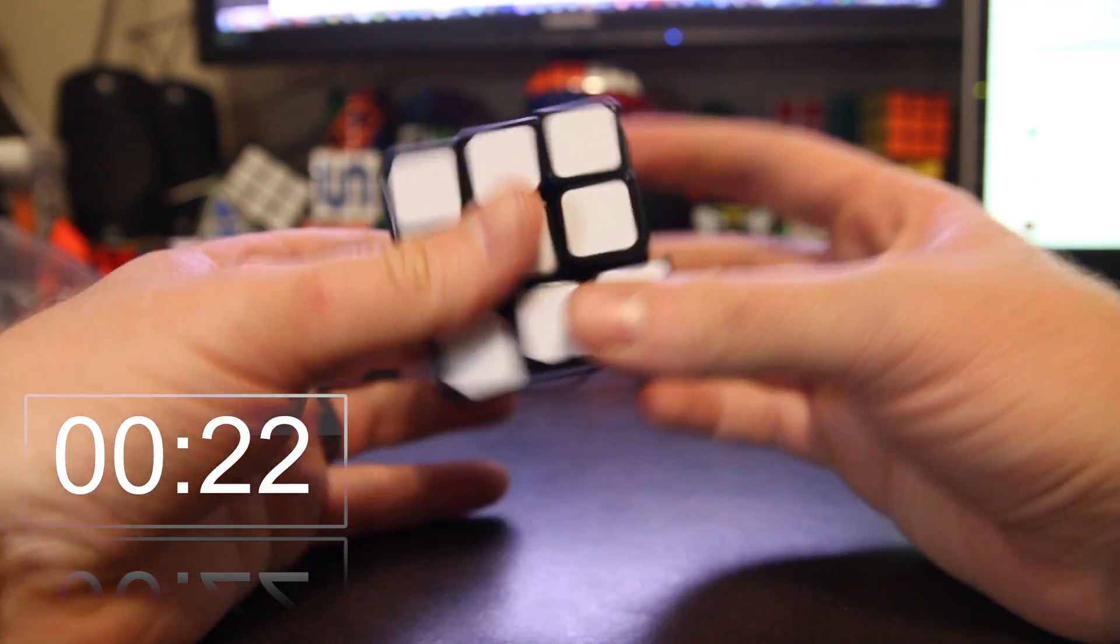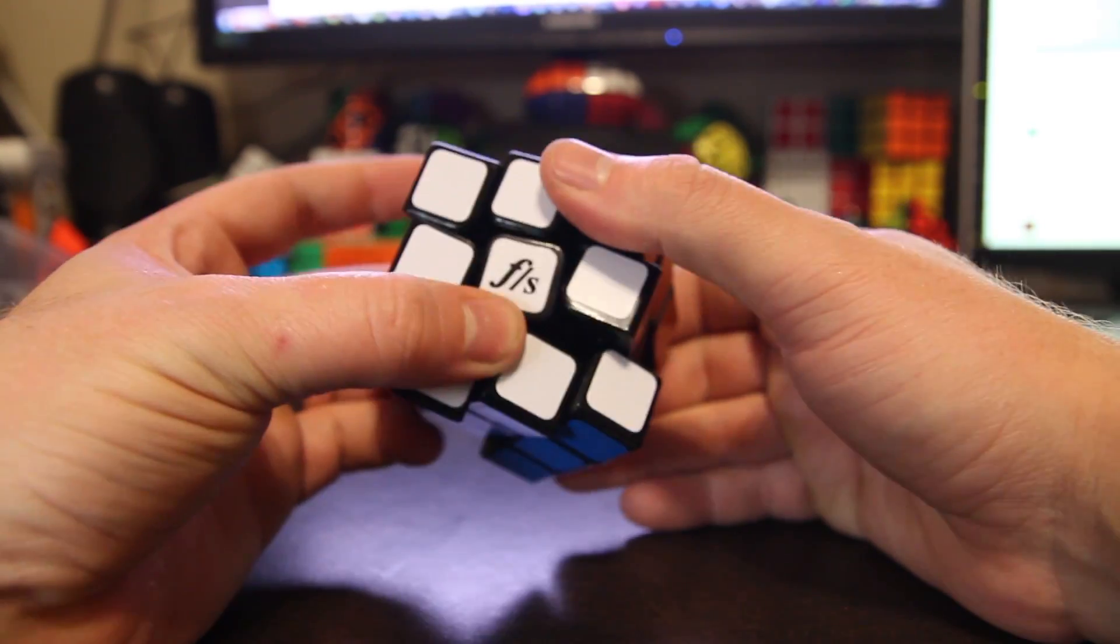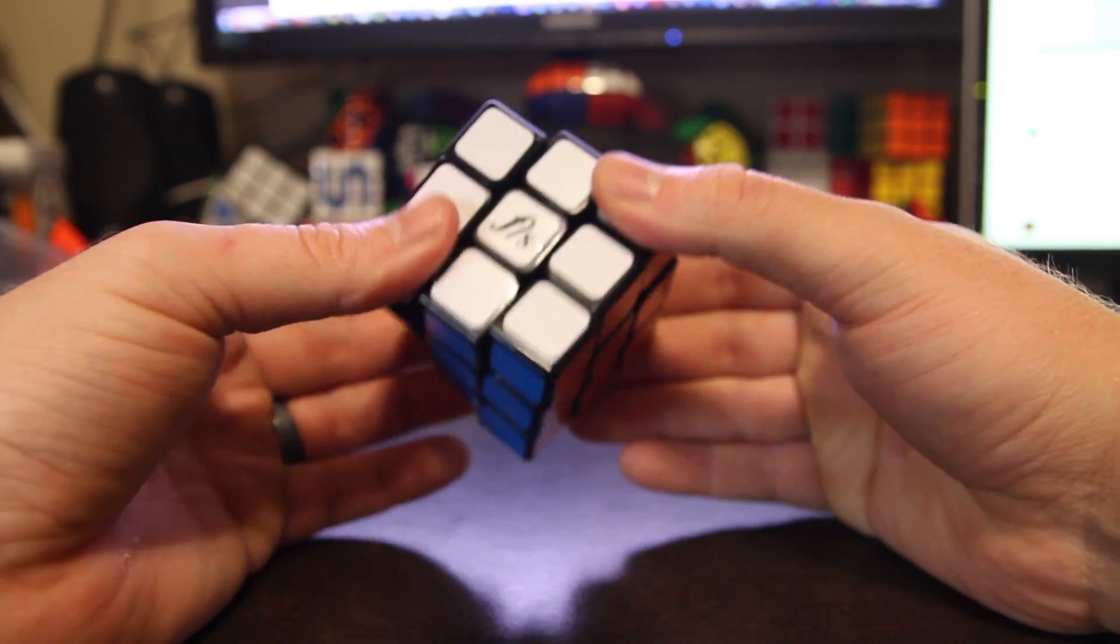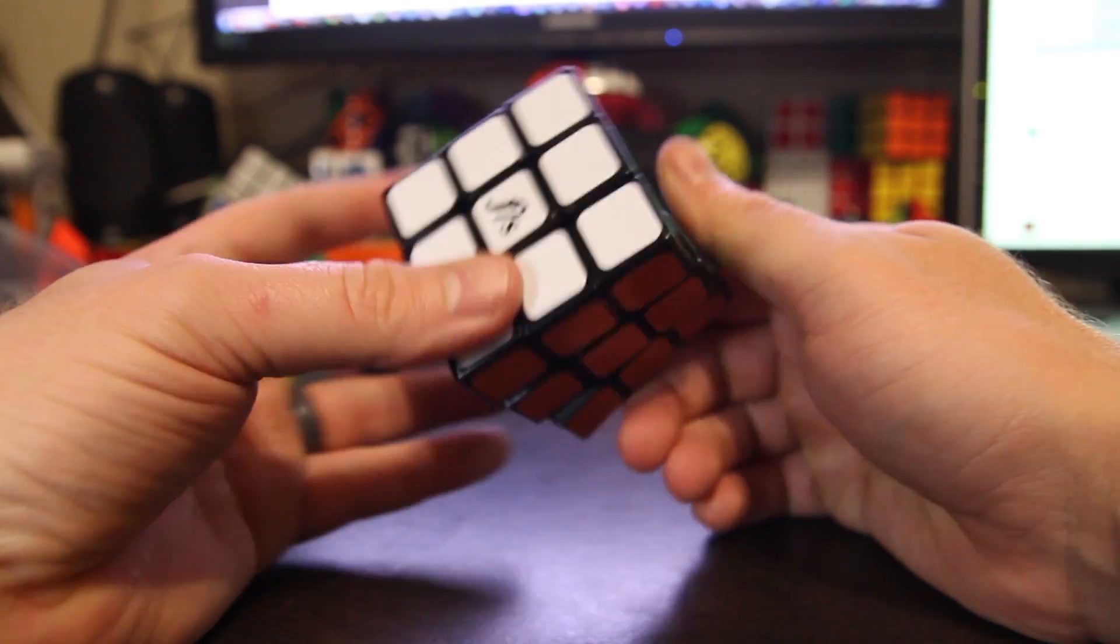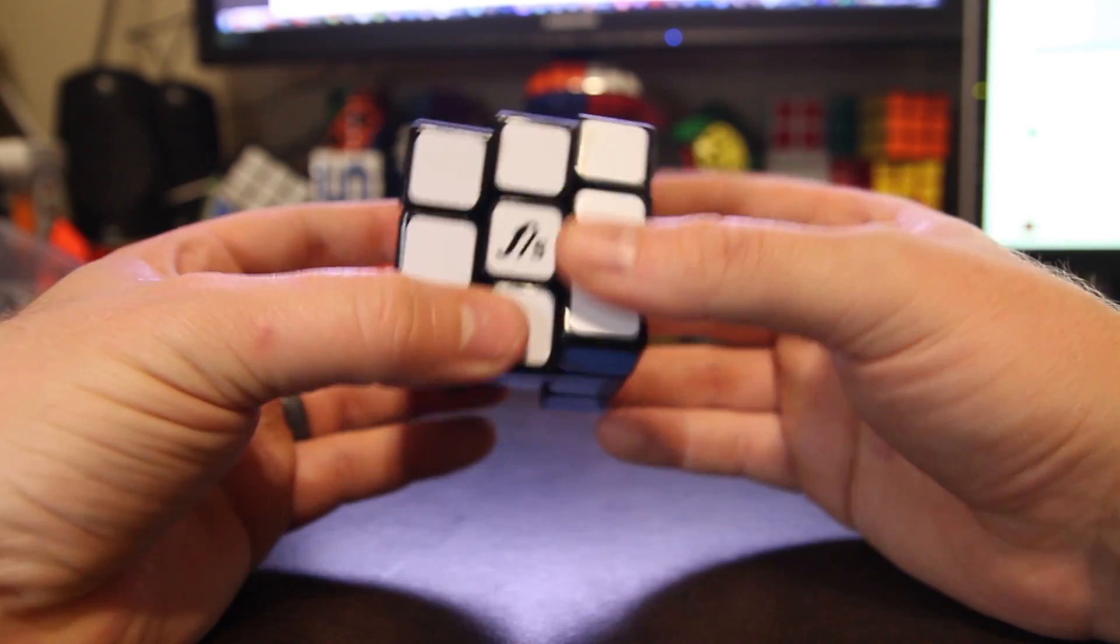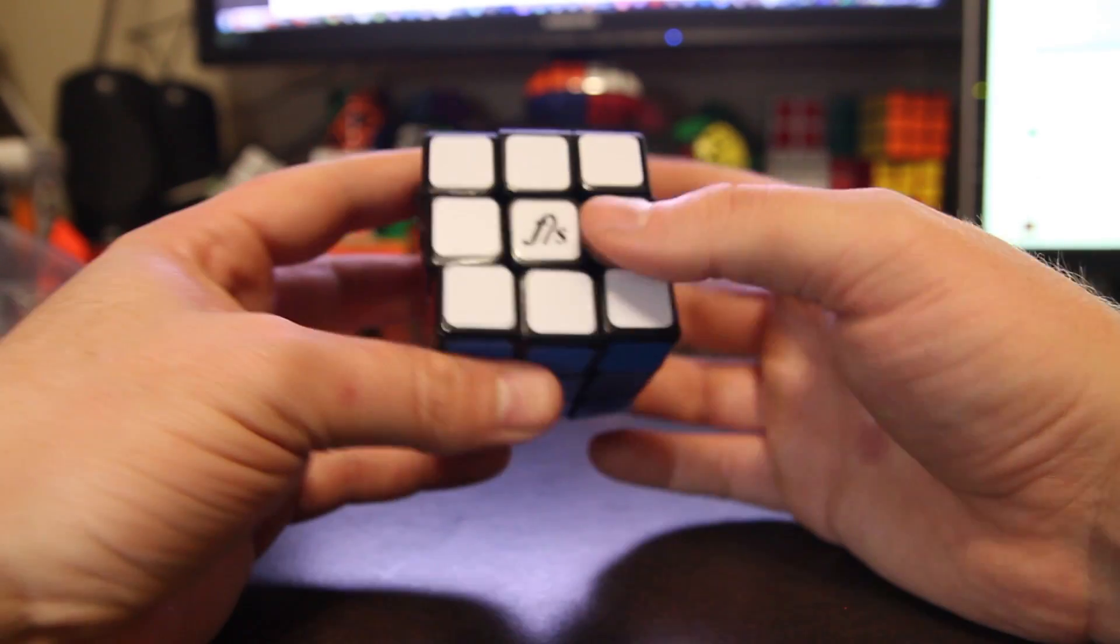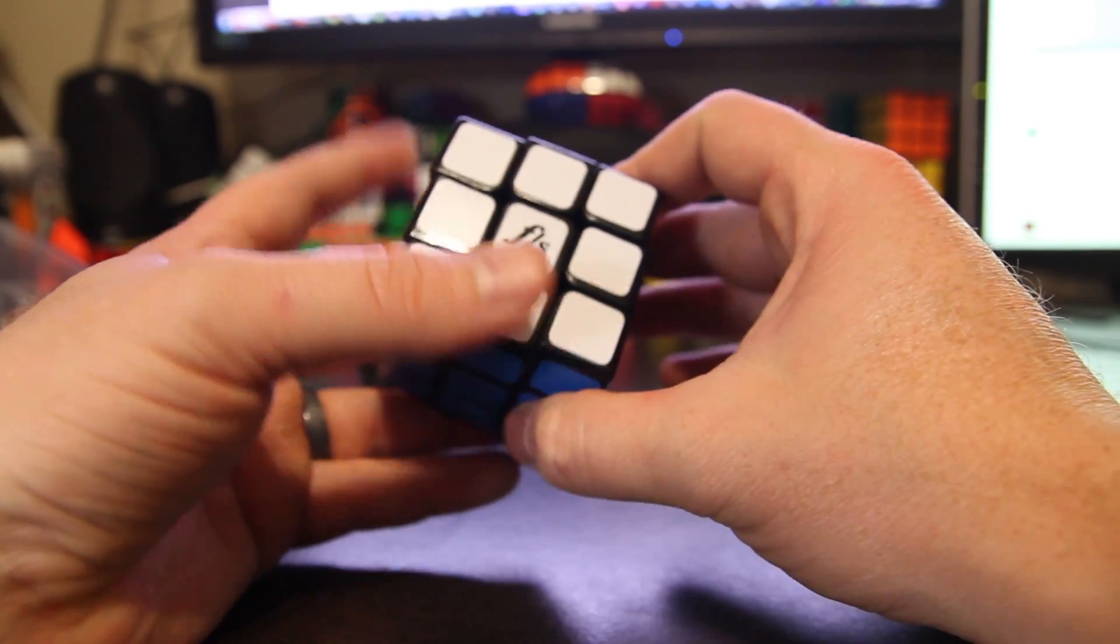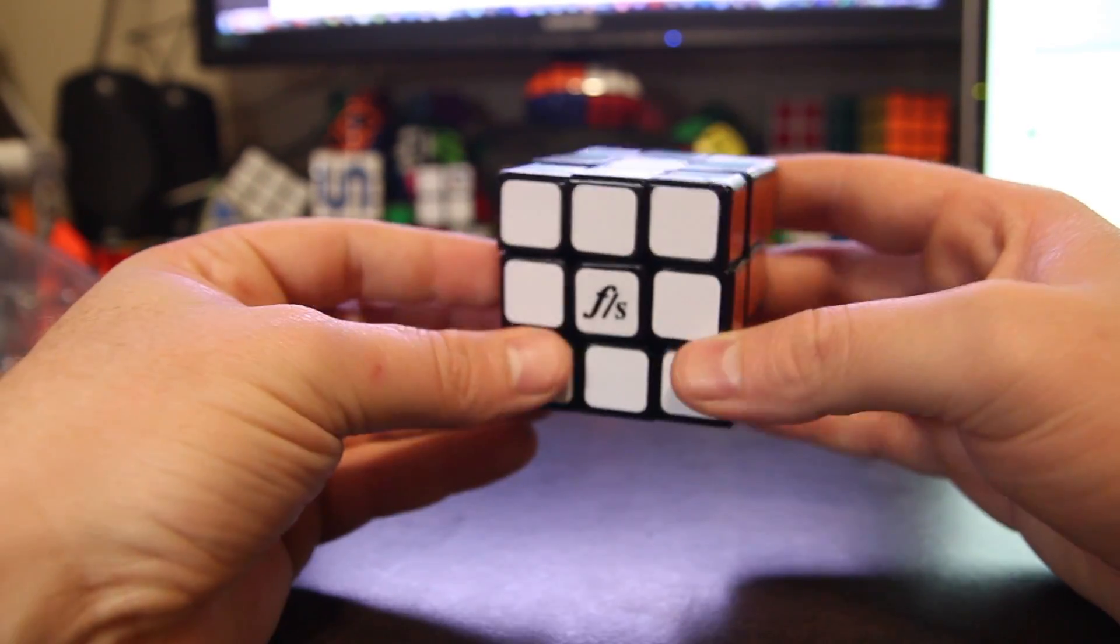I got a little bit lucky because I remembered my algorithm, which I don't always do. I don't remember all my algorithms that I once had memorized, but this one I remembered, so I got a little faster than usual. This puzzle really works well for my turning. I really like it. I think it's my new favorite cube—it's better than the Zanshi, at least the way I have it tensioned now.